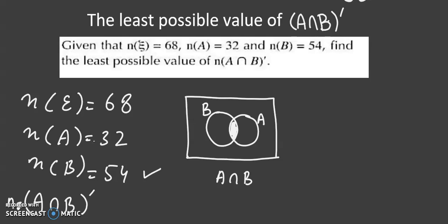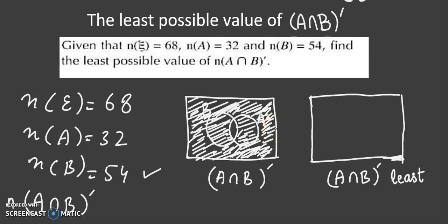But we are dealing with the complement of A intersection B. So complement means that except of this common part, we will shade the remaining area. But in our question we need to find the least value of A intersection B whole complement. It means that this shaded area should be least, as less as it could be.